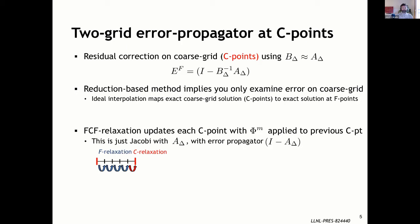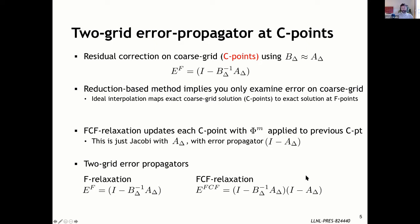We also use a more powerful and expensive relaxation scheme called FCF. FCF does relaxation at F points, then C points, then F points again. Each C point is then updated with phi^M applied to the previous C point. If you do time stepping to fill in the F points and then the C points, you're essentially taking phi^M and propagating from one C point to the next — this is just Jacobi with the ideal coarse grid operator A_delta. So FCF on the coarse grid is just a Jacobi relaxation with error propagator I minus A_delta.